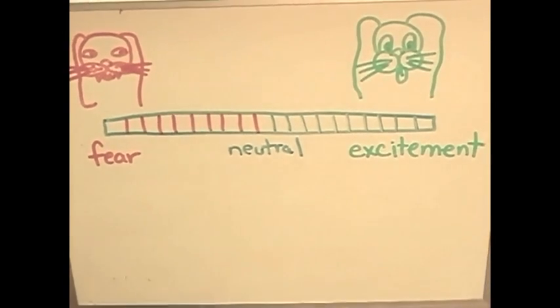With counter-conditioning, a dog can start at any level of fear and move through the continuum to any level of excitement.